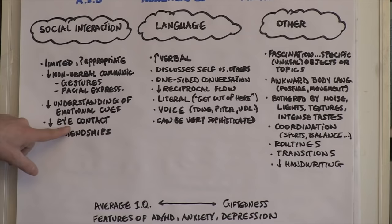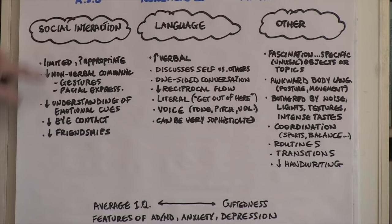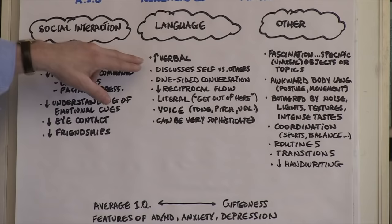Individuals with Asperger's are often seen to have low eye contact, either not making good eye contact or not sustaining it. And in this social interaction domain, those with Asperger's tend also to be at risk for not having many friends. They tend to be socially isolated.